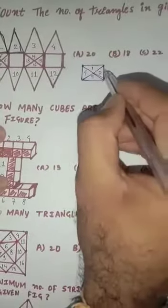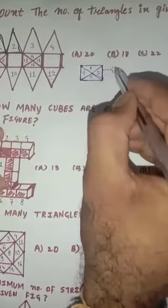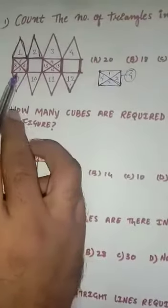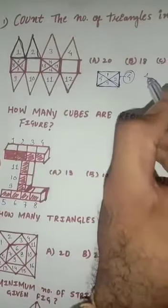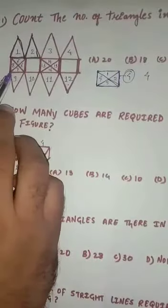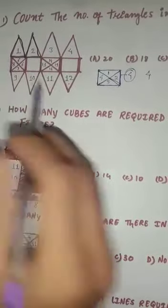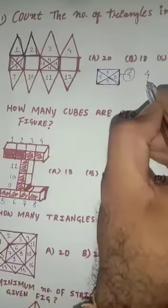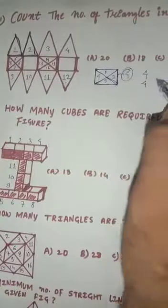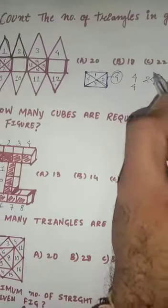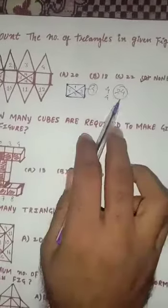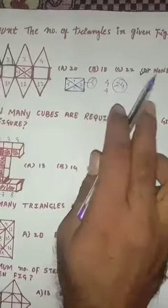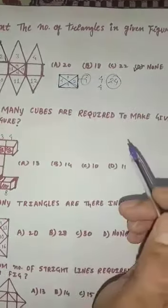So in one cube you get 4 easy triangles and 4 hidden triangles. Since there are 2 cubes, after counting the initial 16, we get 4 more triangles from one part and 4 more from the other. So it will be 16 plus 8 equals 24 triangles in the given figure. Since 24 is not in the options, our answer is 'none of these.'